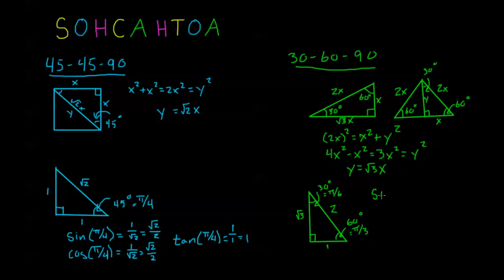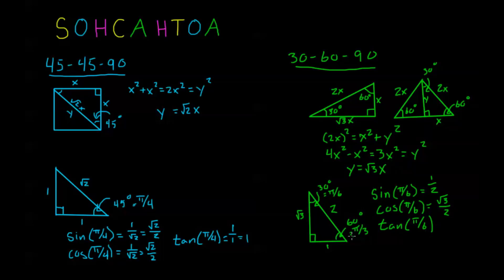For the π/6 angle: sine of π/6 = opposite/hypotenuse = 1/2. Cosine of π/6 = adjacent/hypotenuse = √3/2. Tangent of π/6 = opposite/adjacent = 1/√3, which rationalizes to √3/3.